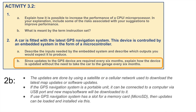Since updates to the GPS device are required every six months, explain how the device is updated without the need to take the car to the garage. Why do we need updates? Town planning means more roads are built, roundabouts added, or roads closed and new roads added. The updates are done by using a satellite or a cellular network to download the latest maps or software updates.